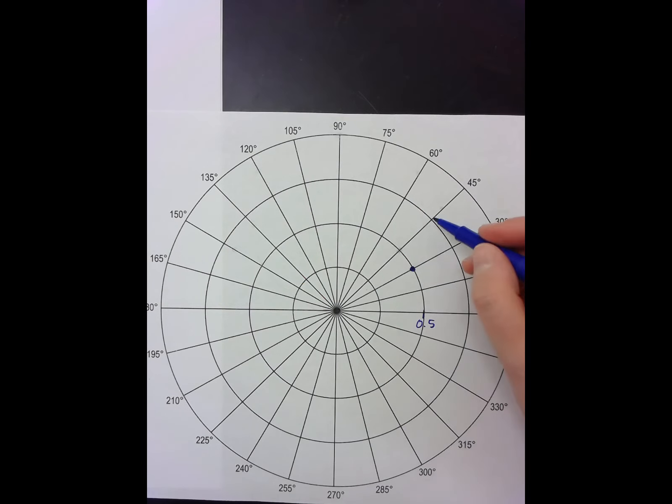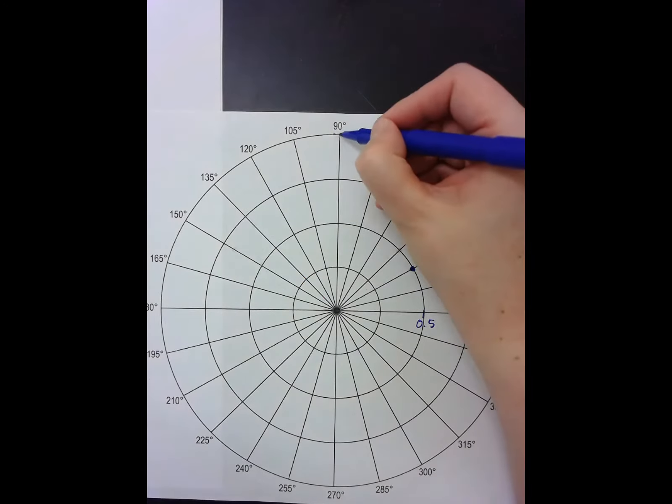This is 0.5, this is 0.75, so 0.71 goes here. 60 degrees is 0.87, so about there. 90 degrees is 1.